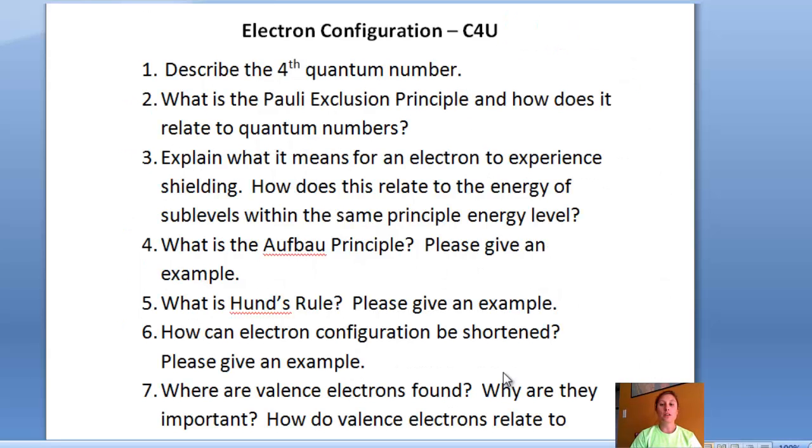Here are the check for understanding questions for the fourth section, electron configuration. Number 1, describe the fourth quantum number. Number 2, what is the Pauli exclusion principle, and how does it relate to quantum numbers? Number 3, explain what it means for an electron to experience shielding. How does this relate to the energy of sublevels within the same principal energy level? Number 4, what is the Aufbau principle, and please give an example.